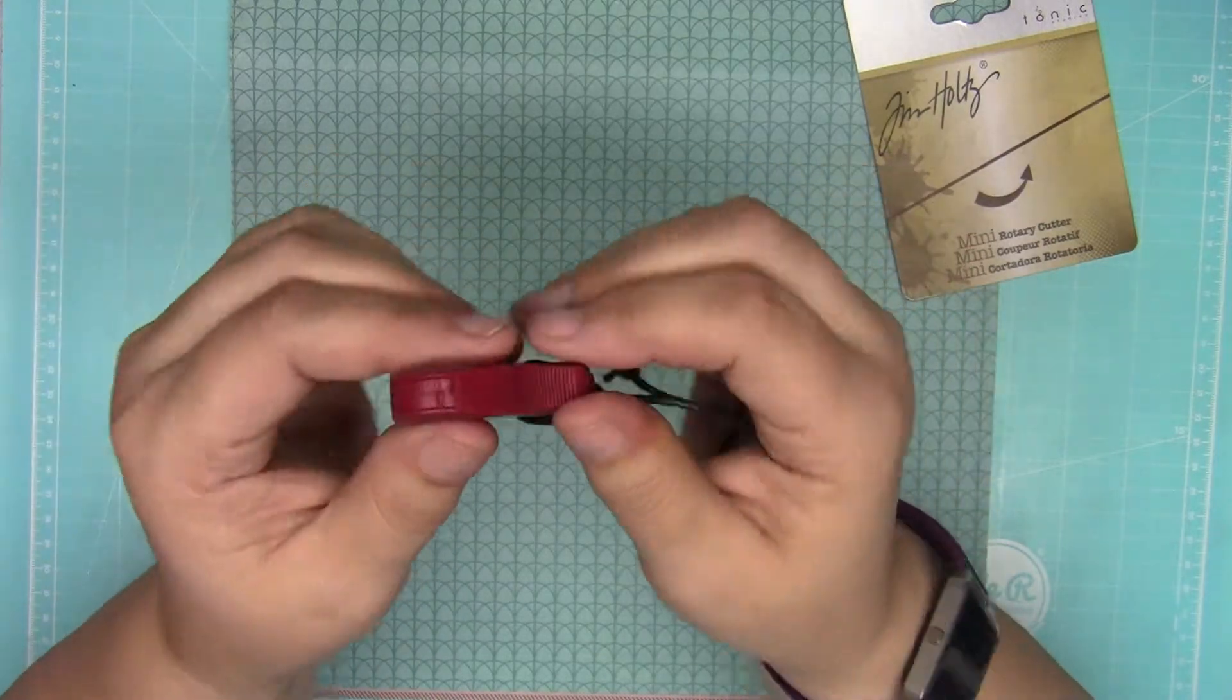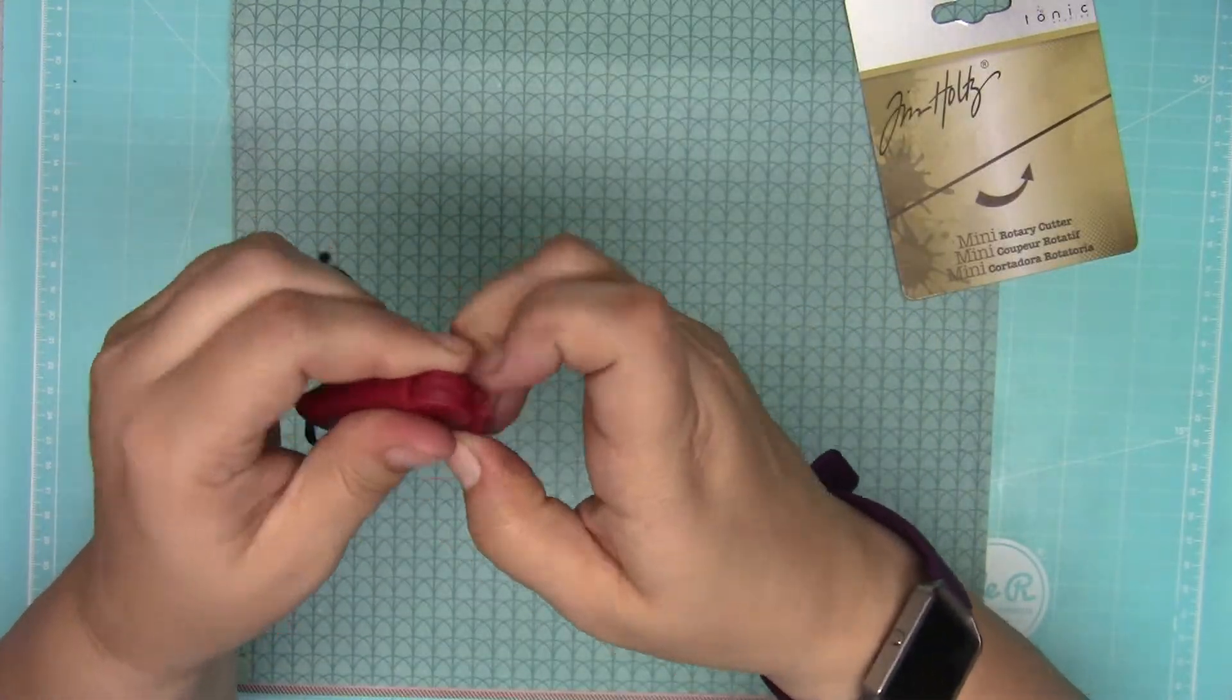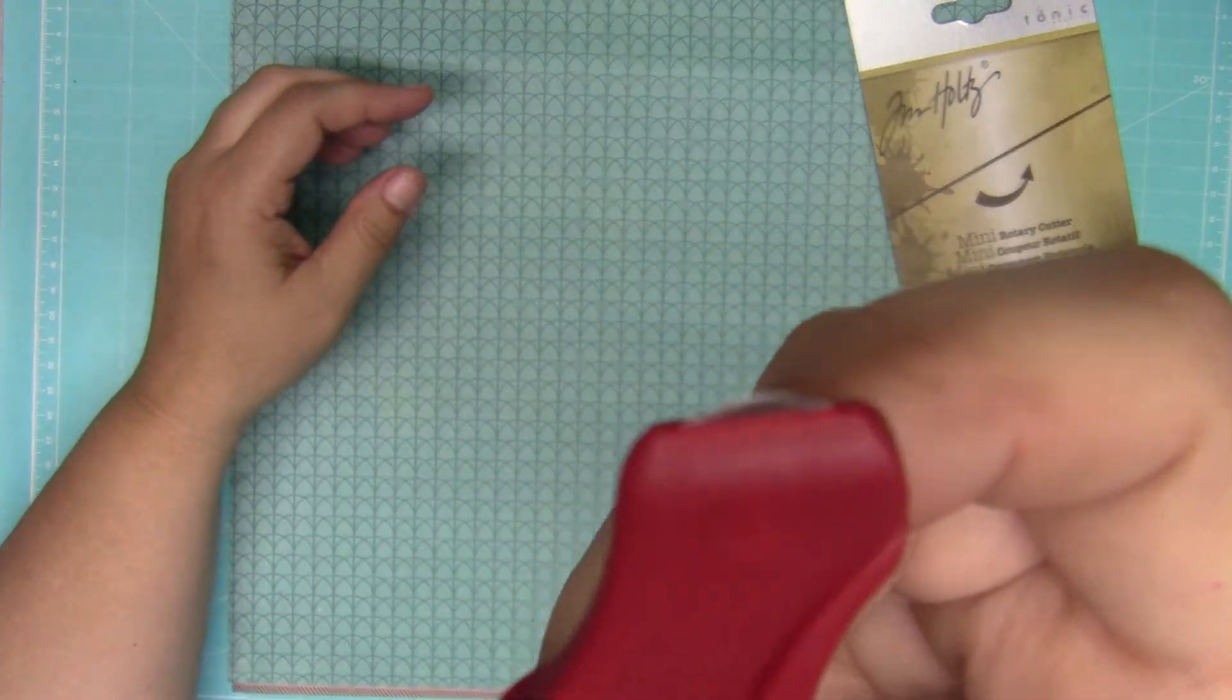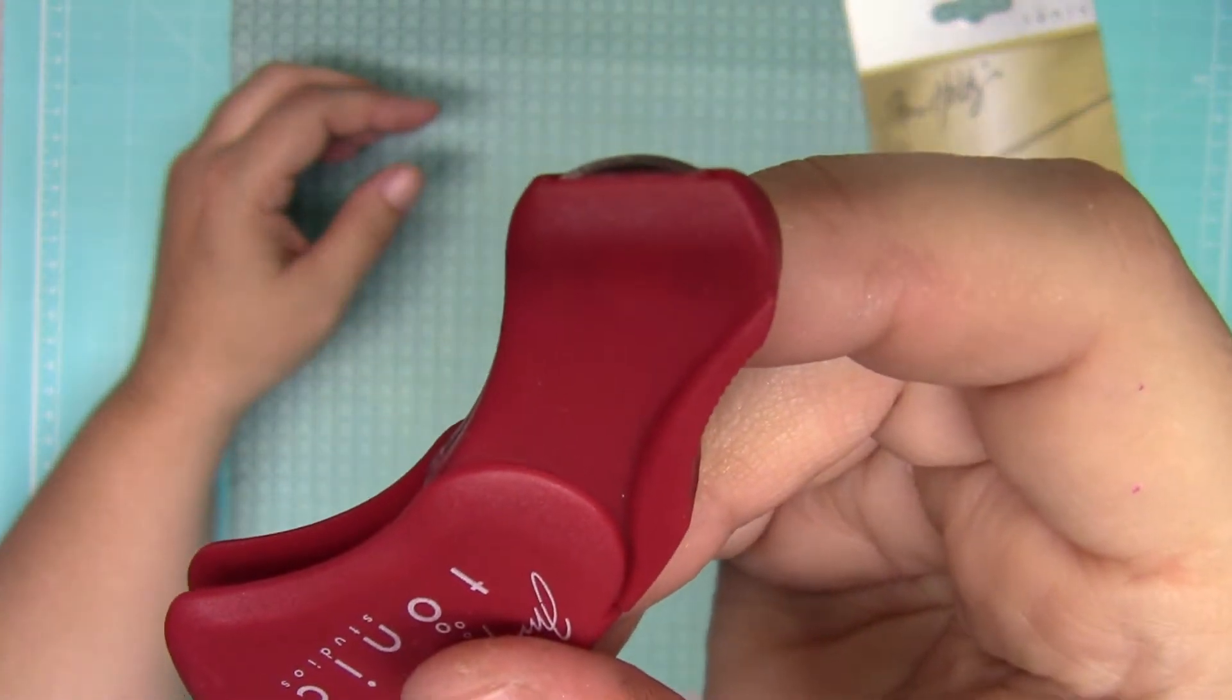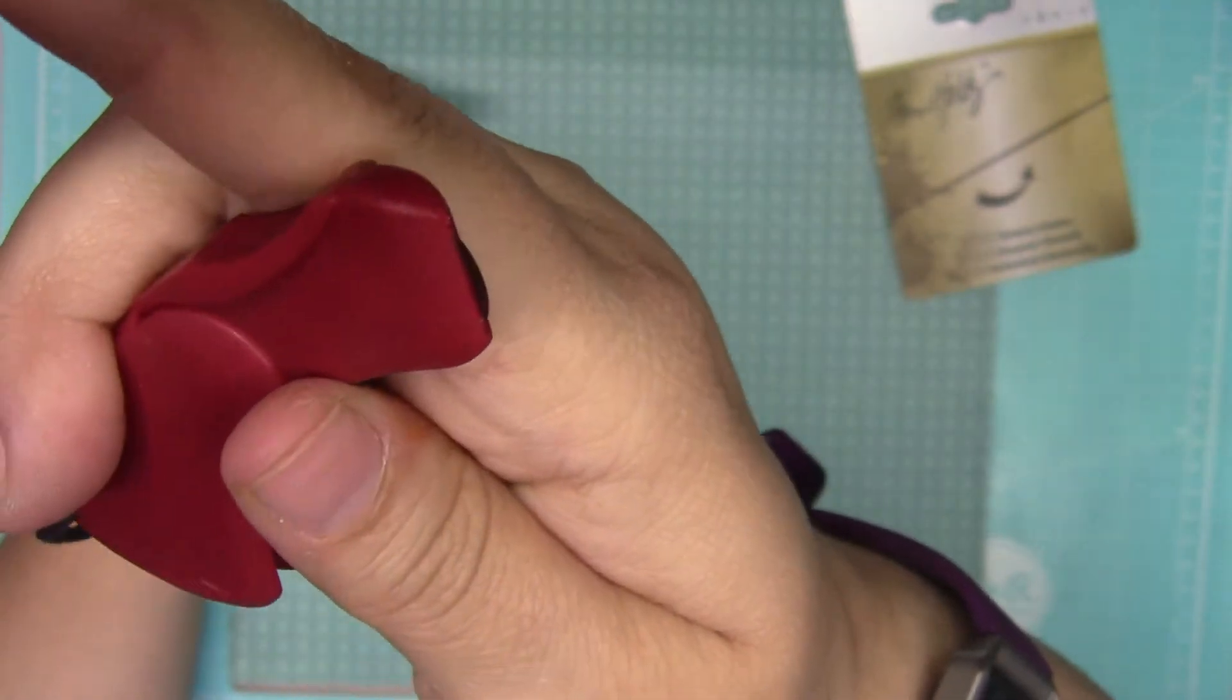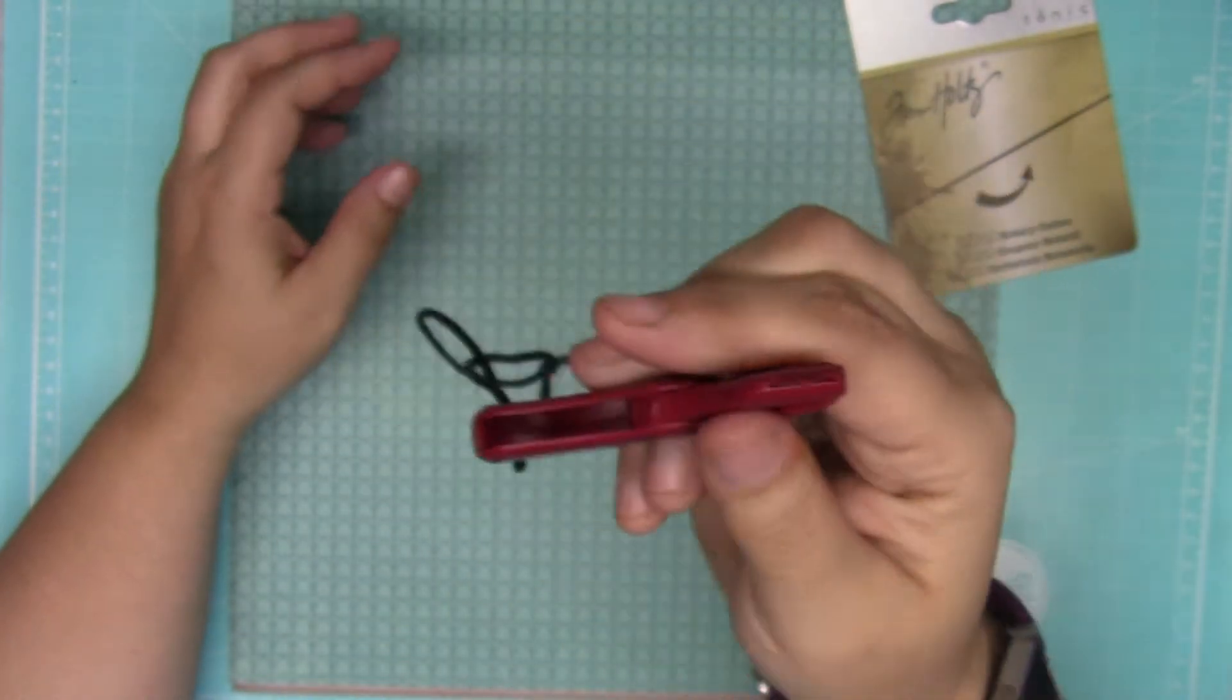Basically it opens up, there we go, and there's a teeny tiny blade on it. I don't know if you can see it, maybe if I get it under the camera. Teeny tiny blade, super sharp, don't touch it. It is very sharp. It's a rotary cutter.